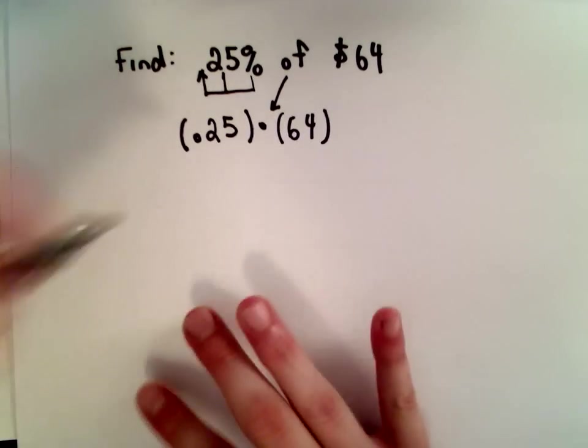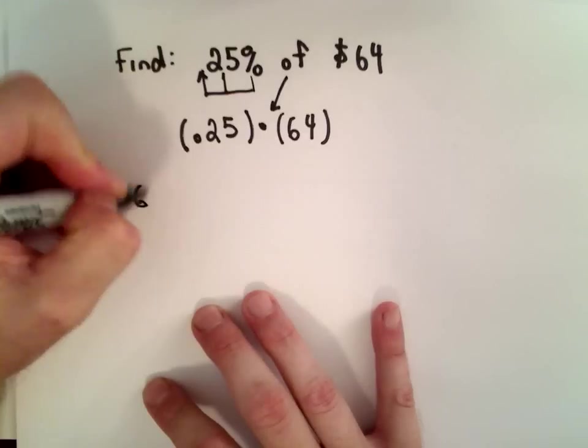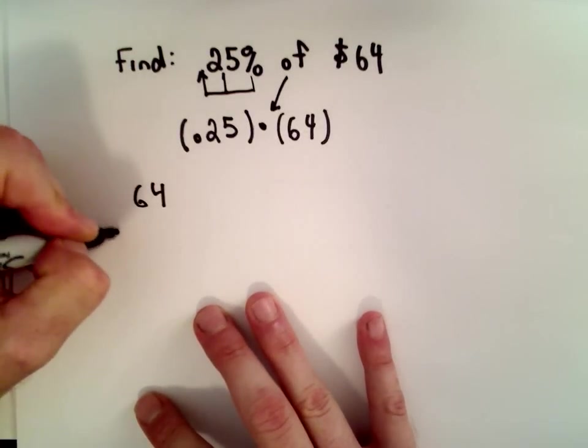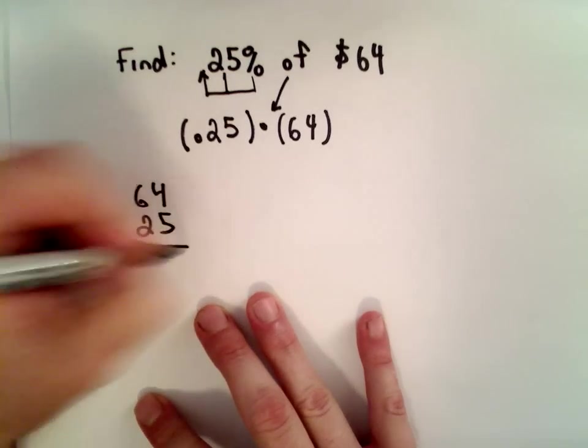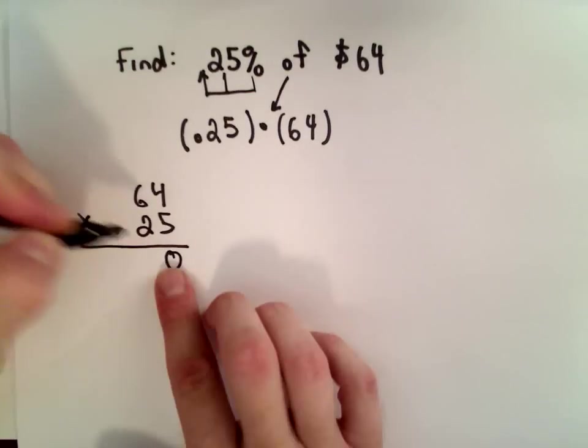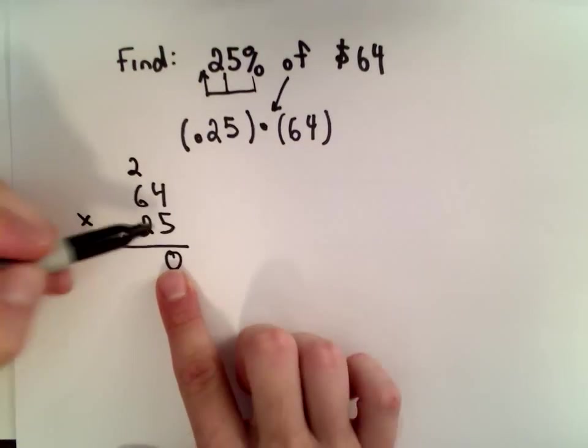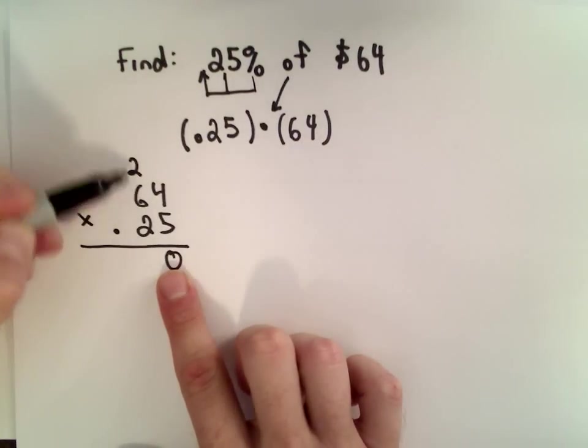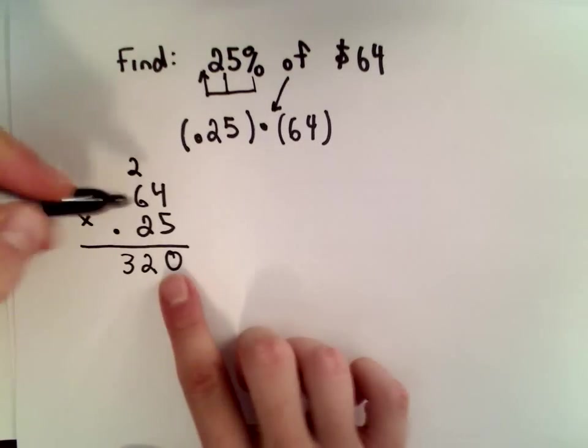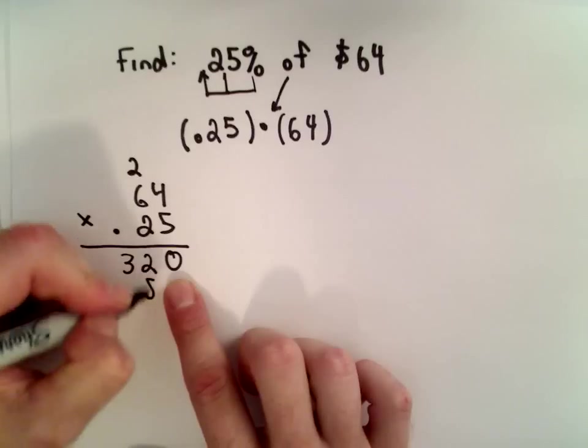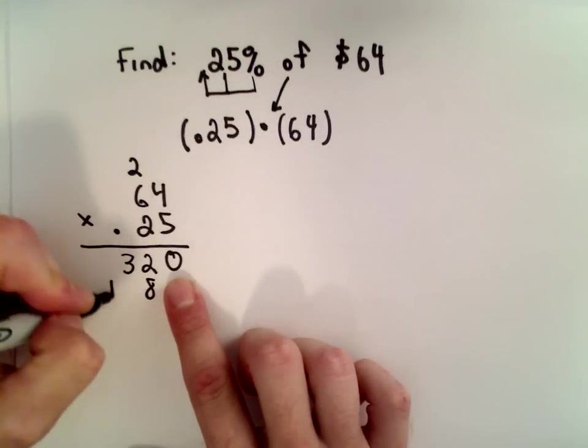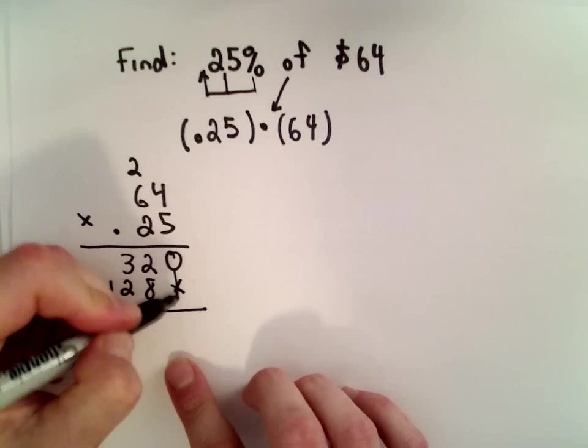One way to do it would be just to let's just do the arithmetic. So, I'm going to take 64 multiplied by .25. Okay, so, 5 times 4 is 20. I'll drop down to 0, carry the 2. 5 times 6 is 30. 30 plus 2 is 32. Now, I'm going to take 2 times 4. That's 8. 2 times 6. That's going to be 12. So, now let's add those up.